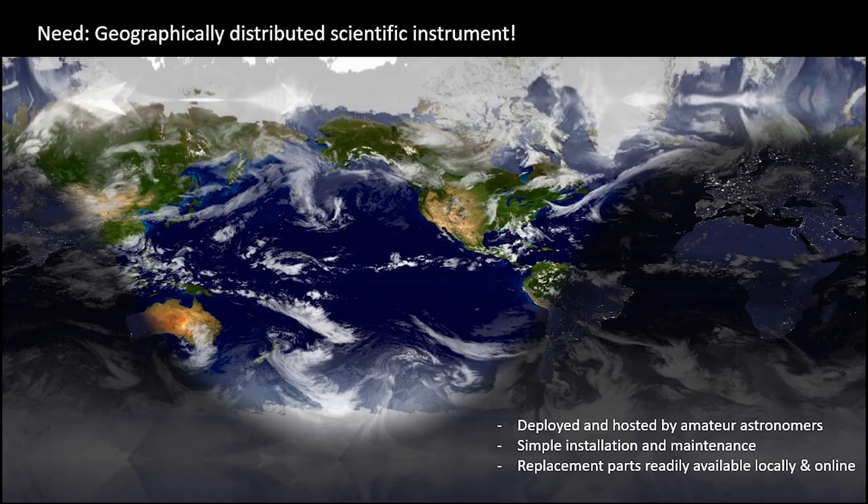What we really need is a geographically distributed scientific instrument. To facilitate deployment and keep costs low, our systems are hosted and deployed by amateur astronomers, usually in their houses. The installation is simple and the maintenance is simple too, and we make sure that the replacement parts for our cameras are readily available locally or can be bought online very cheaply.